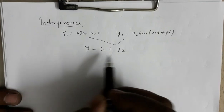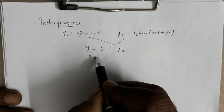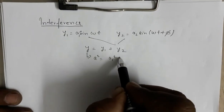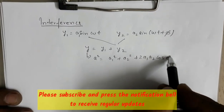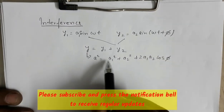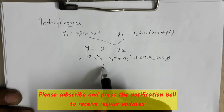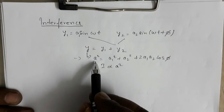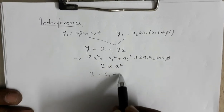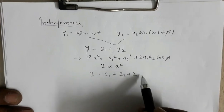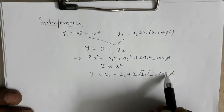The amplitude of the resultant wave is given by: A² = A1² + A2² + 2·A1·A2·cos φ. This is the expression for the amplitude of the resultant wave. Since intensity is proportional to amplitude squared, in terms of intensities this can be written as: I = I1 + I2 + 2√(I1·I2)·cos φ.